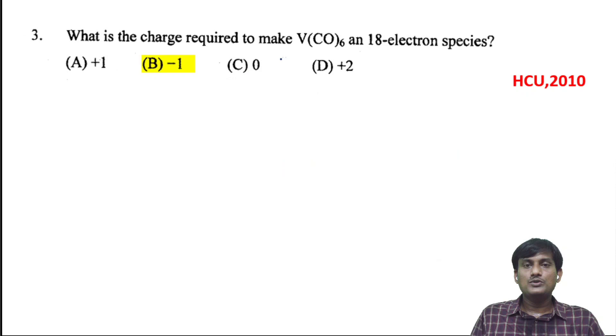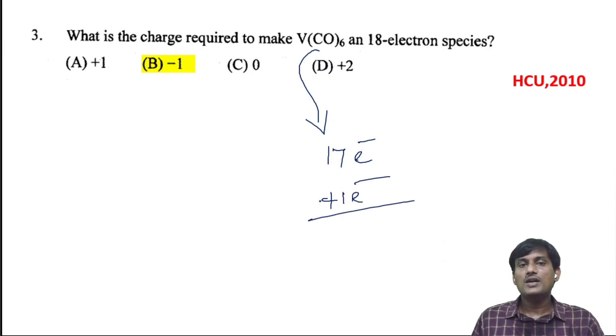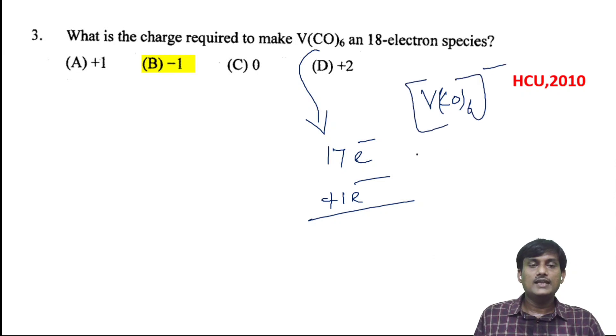What is the charge to make V(CO)6 an 18-electron species? We know that V(CO)6 is a 17-electron species. If we add one electron, we will get 18 electrons. One electron means we have to add one negative charge. So if you take V(CO)6^-, it has 18 electrons. Minus 1 is the correct option.